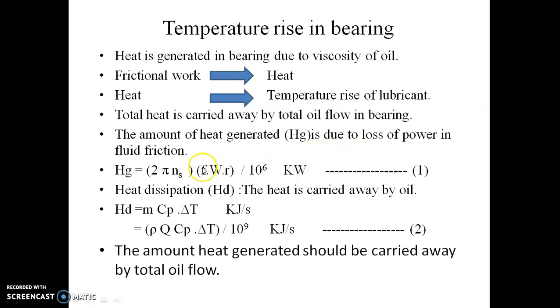How much amount of heat is generated? The amount of heat generated Hg is nothing but the amount of power lost in the fluid friction. So Hg is given by 2π ns f W r / 10⁶ kW (equation 1). Now this amount of heat generated should be dissipated and this heat is carried by the oil.